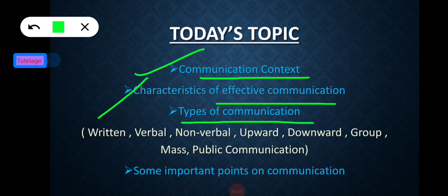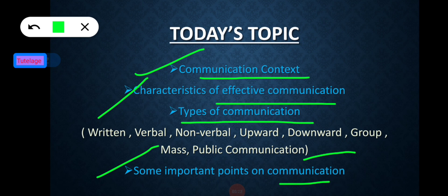In my last session on communication, we discussed some important types of communication. Today we are also discussing important types of communication — that is written, verbal, non-verbal, upward, downward, group, mass, and public communication. The fourth topic is some important points on communication. If you have missed my last session on communication, please go and check it — the link is available in my first comment and description box. Feel free to ask any doubts in the comment section.